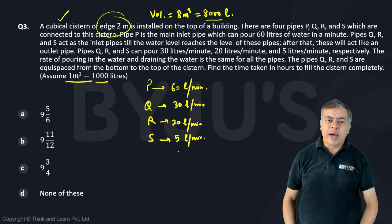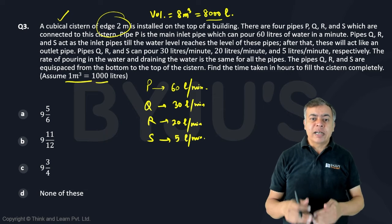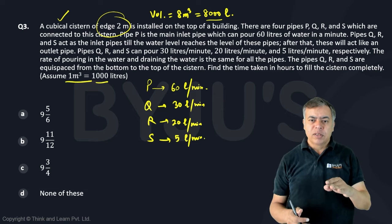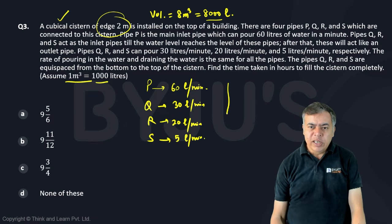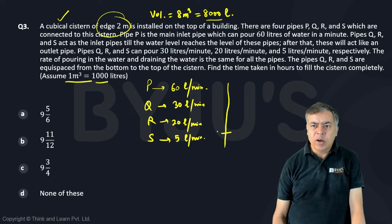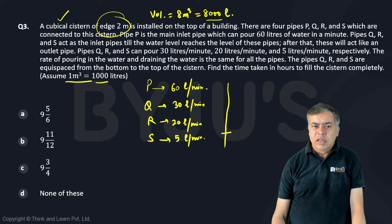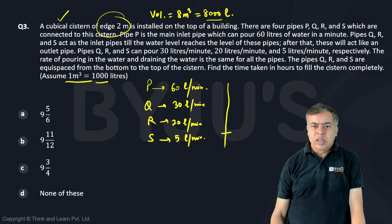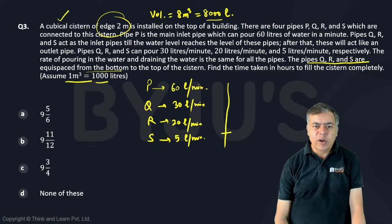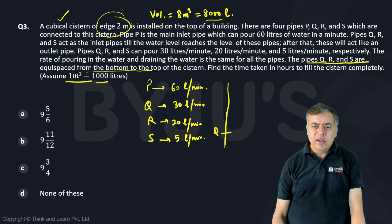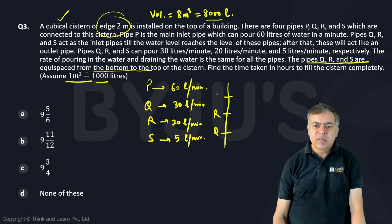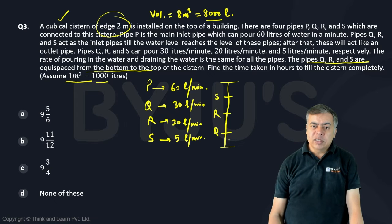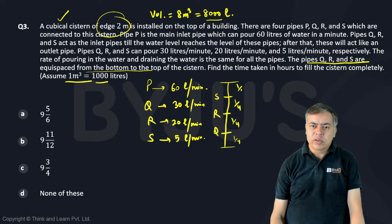But the problem with PQRS is that they are inlet pipes till the water level reaches the level of these pipes. So you can think like this, suppose here Q is there, this is in this order from bottom to top. It is given here that the pipes PQRS are equispaced from bottom to the top. So that means Q is here, R is here, S is here. So equidistant from bottom to the top, that means this is one-fourth, one-fourth, one-fourth, one-fourth.